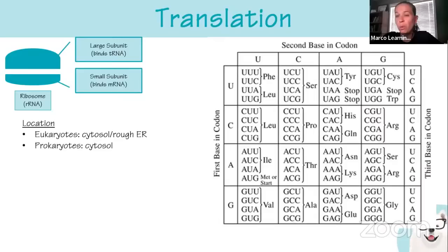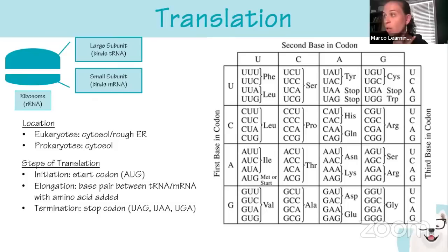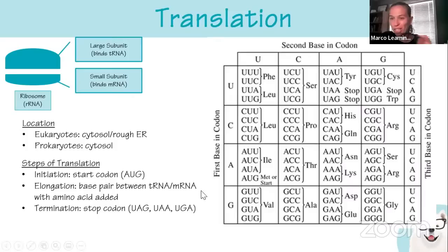Translation takes place in the cytosol or rough ER in eukaryotes — it starts in the cytosol but can move to the rough ER if it gets a signal peptide. In prokaryotes it's always in the cytosol. Translation starts at the start codon AUG, which also codes for methionine — you can see it says 'met or start' on the codon chart. Termination occurs at stop codons: UGA, UAG, or UAA. The entire codon chart is given to you, so you don't need these memorized.